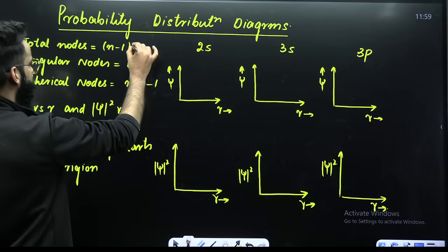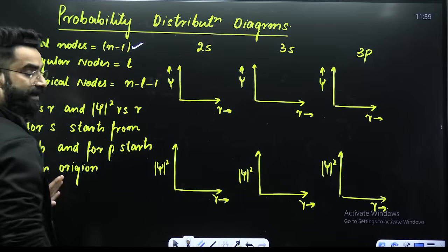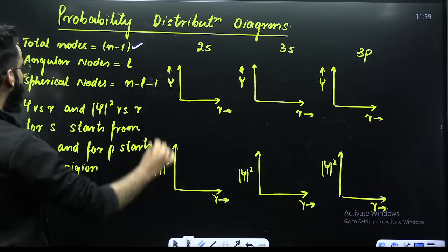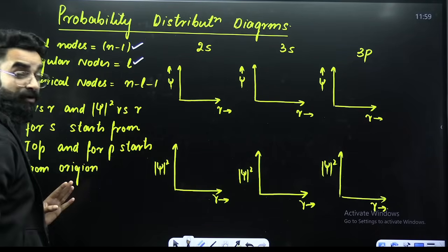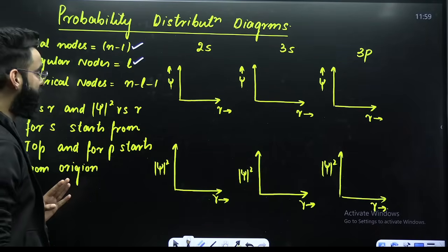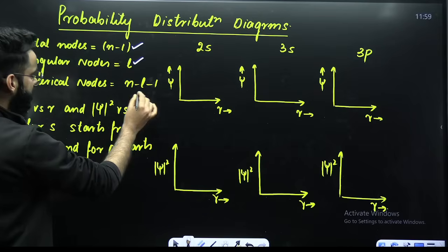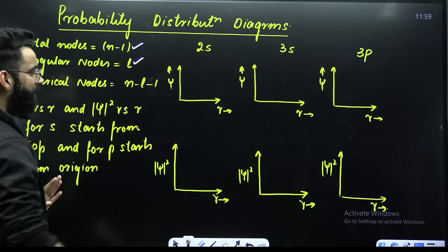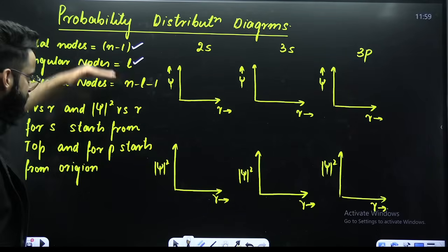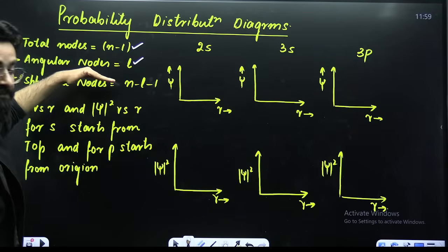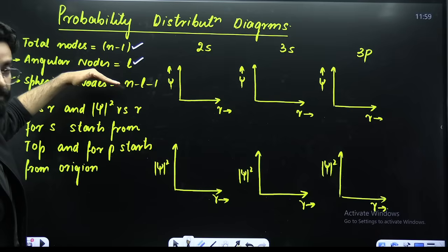How do you calculate total number of nodes? n minus 1. How do we calculate angular nodes? The value of l as the azimuthal quantum number. Spherical nodes? n minus l minus 1. These are the three formulas which you need to remember.